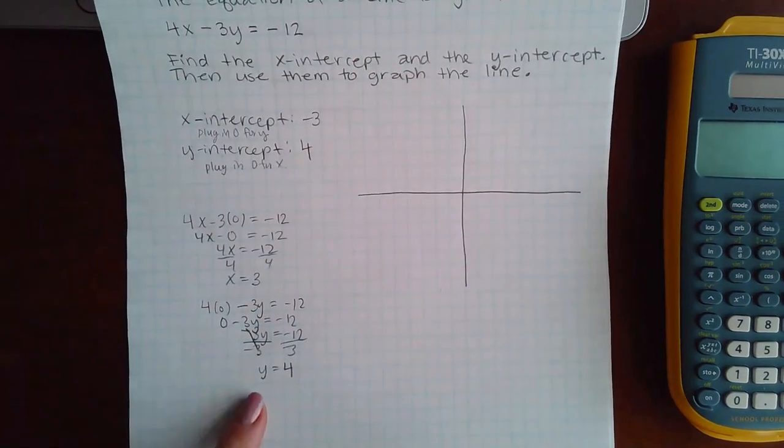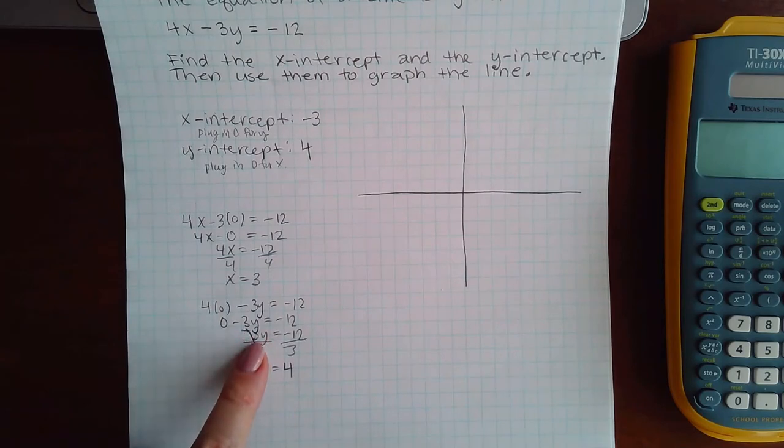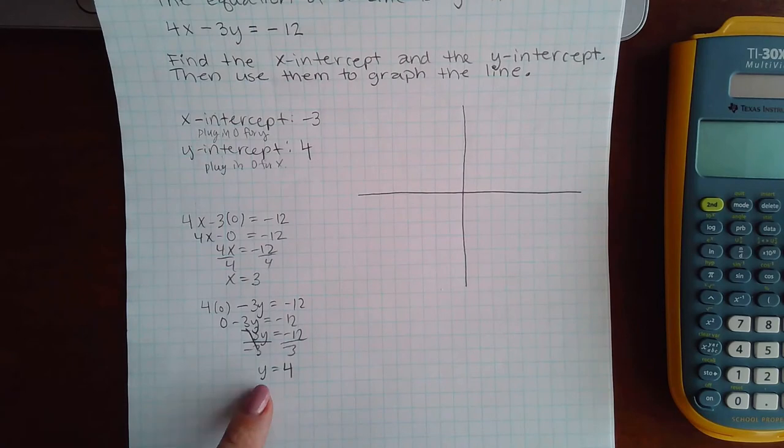Oops, you can't see my paper. Okay, so when we plugged in zero, we got zero, which means that's just negative 3y. And then we divided both sides by negative three to get y by itself, and we ended up with positive four.